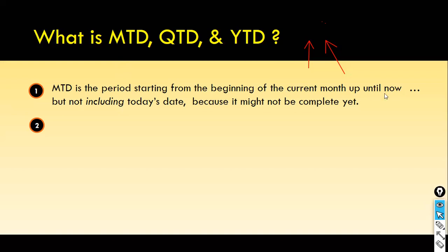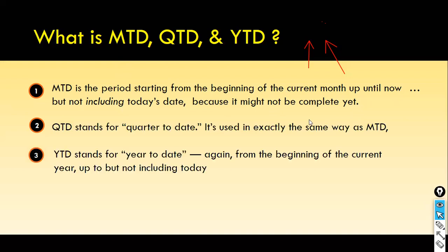Month-to-date is the period starting from the beginning of the current month up until now, but not including today's date, because it might not be complete. Quarter-to-date is the same — starting from the beginning of this quarter up until now, not including today. Year-to-date starts from the beginning of the current year. For month-to-date, the cumulative total resets every month beginning. For quarter-to-date, the cumulative total resets every quarter beginning.